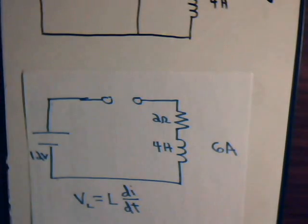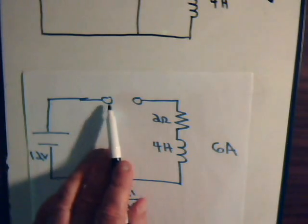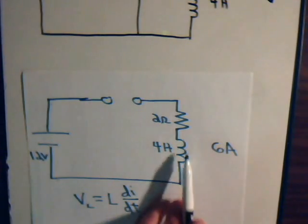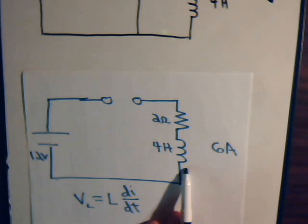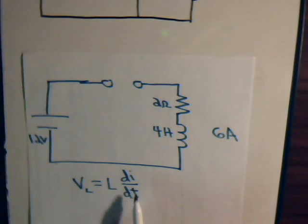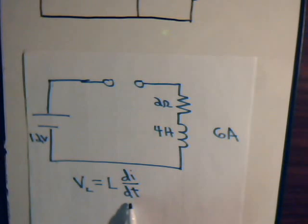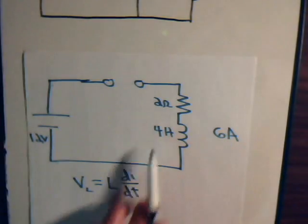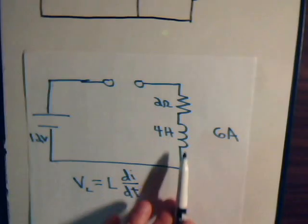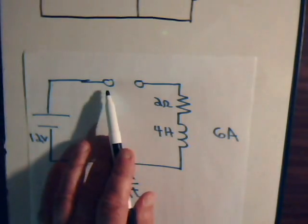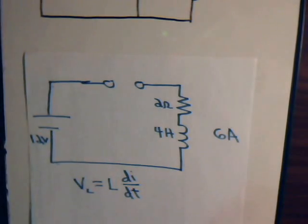We discussed how there can be a tremendous voltage drop developed across the gap that could drive this 6 amps right across the air gap. When we open the switch, the 6 amps of current collapses very quickly. It can collapse so fast that the induced voltage across the coil could reach several million volts, because di/dt has such a high value that when you multiply it by the inductance — in this case 4 henries — it can generate a huge voltage and create a spark.